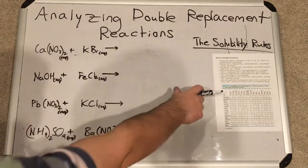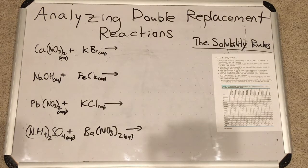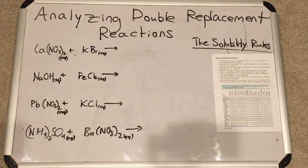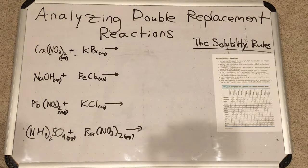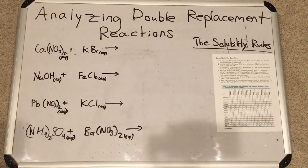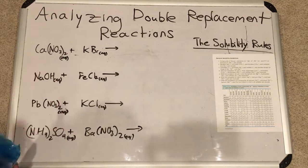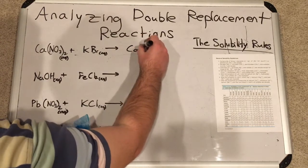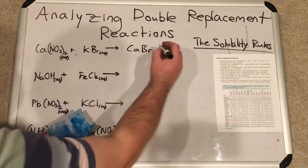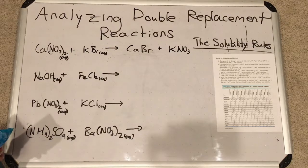Let's work on these examples. We're going to first determine what the products will be, determine if they're soluble or not, charge balance them, and then balance the reaction. We've got Ca(NO3)2, which is calcium nitrate, and we've got potassium bromide. If the reaction occurs, calcium and potassium will switch anions. So we will have calcium bromide — put the bromide with the calcium — and put the nitrate with the potassium, so we'll get KNO3.